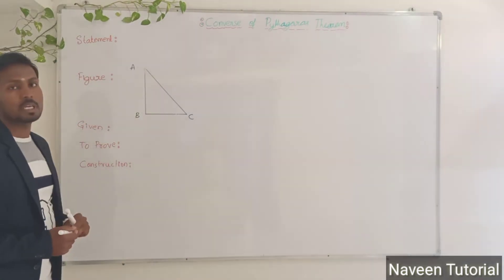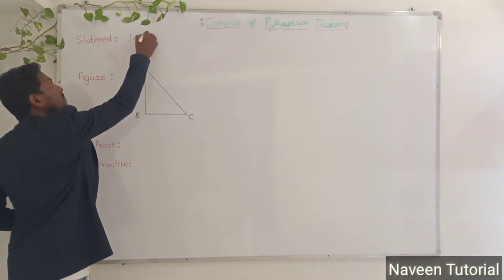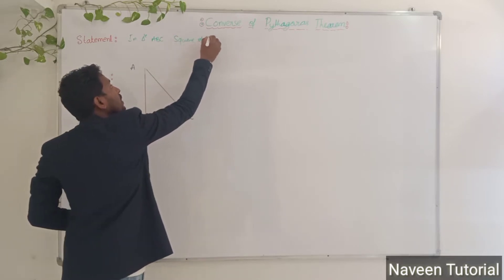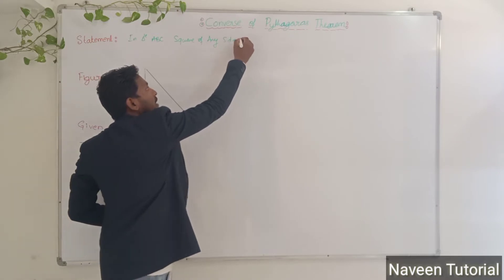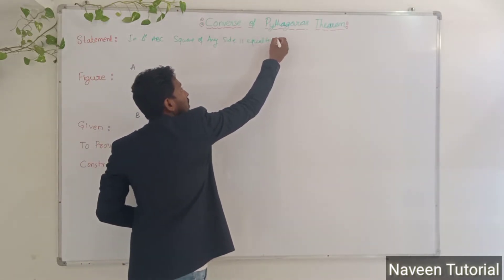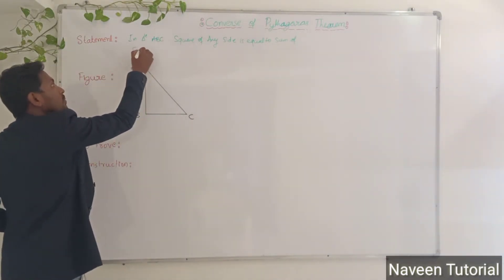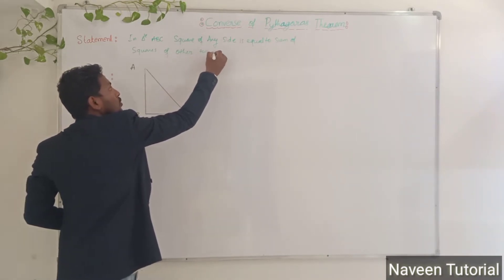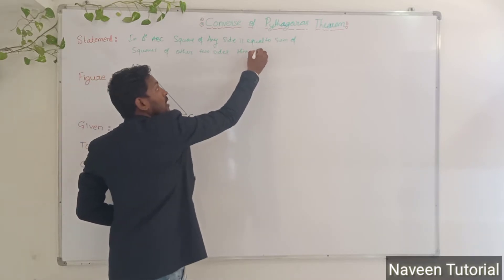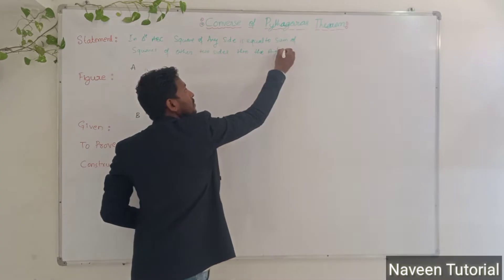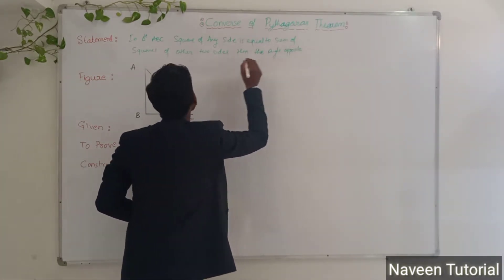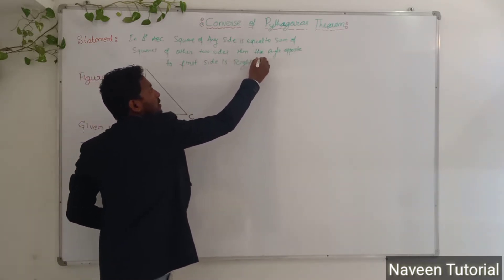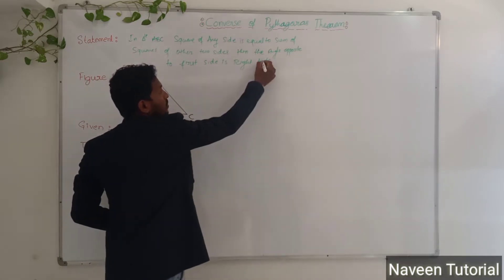Let's see the statement. In triangle ABC, square of any side is equal to the sum of squares of the other two sides. Then the angle opposite to the first side is a right angle.